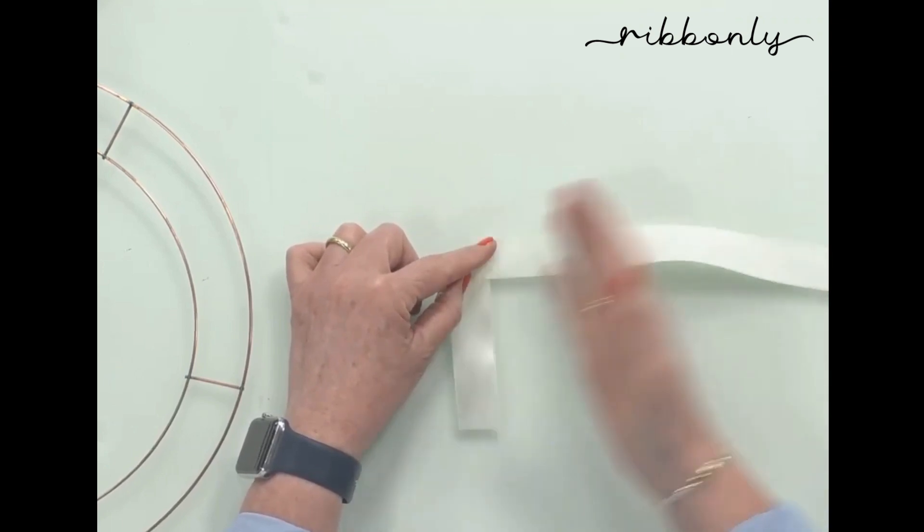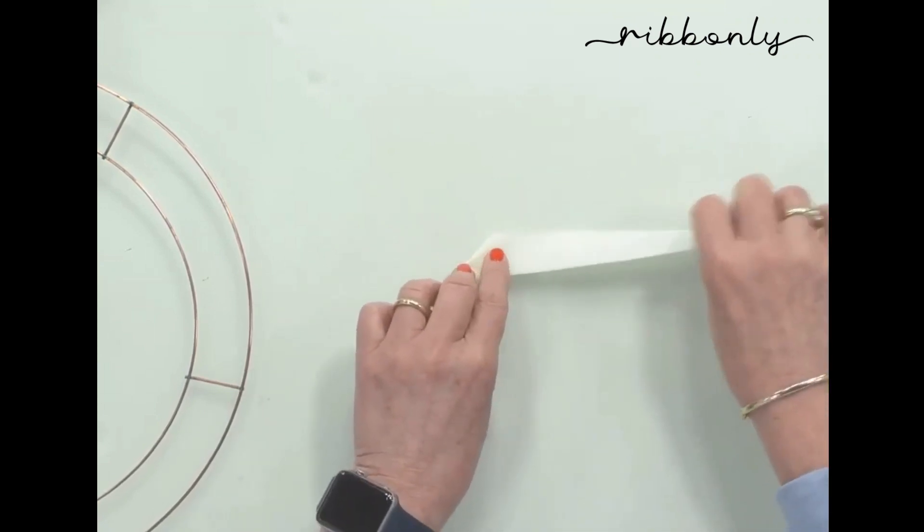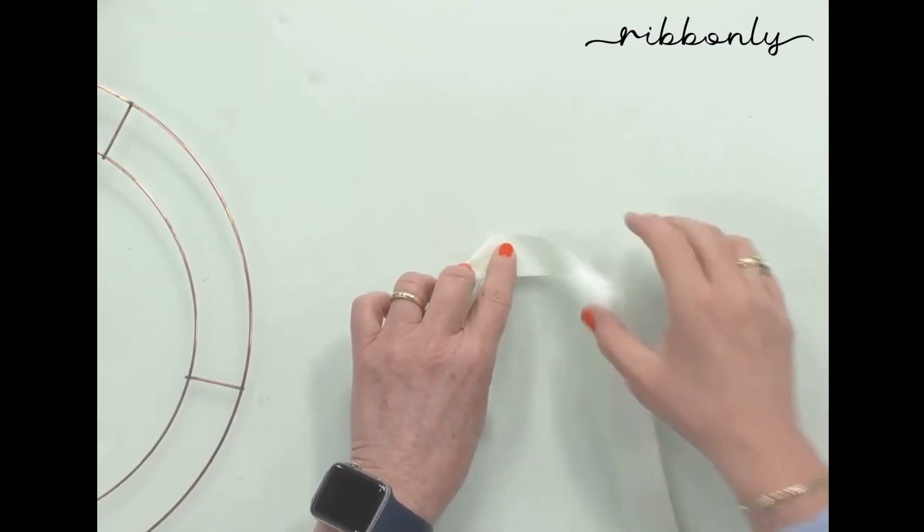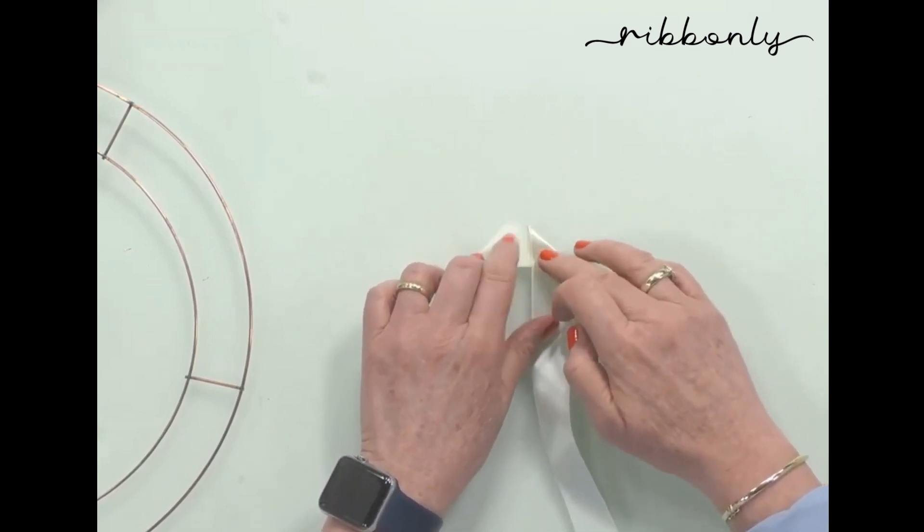You really need to start with something like this, a nice good ribbon with lots of form in it. So I fold it over to the right and I have made a little crease there, a 45 degree crease. Then I take the ribbon and I bring it down towards me again.